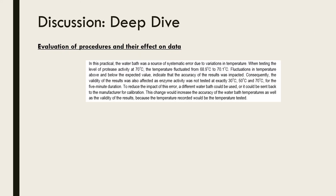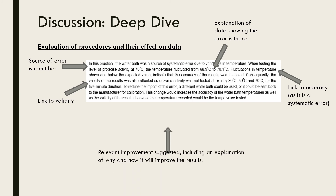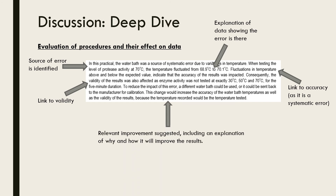Here is an example where the student has discussed errors and improvements in an integrated fashion — this is often a good approach to avoid repetition and conserve word count. The student begins the paragraph by identifying the source and type of error: the water bath is a source of systematic error. They then explain how the data supports the fact that this systematic error is present — the water bath temperature fluctuated from 68.9 to 70.1 degrees. The student then links this to accuracy, as it is a systematic error, and to validity, providing reasons for their conclusions. An improvement to address this source of error is then suggested, including an explanation of why and how it will improve the results: recalibrating the water bath will increase its accuracy and therefore the validity of the results, as the temperature recorded will be the one actually tested.